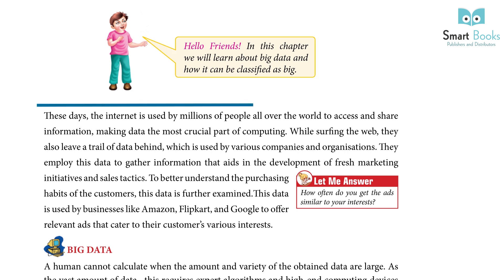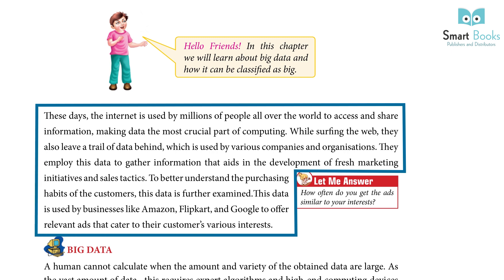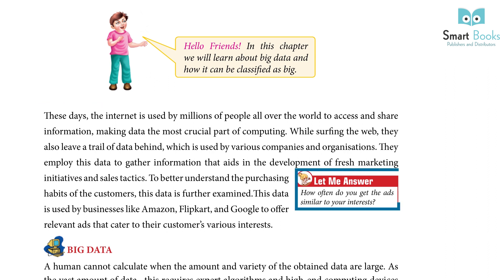Hello friends! In this chapter we will learn about big data and how it can be classified as big. These days the internet is used by millions of people all over the world to access and share information, making data the most crucial part of computing. While surfing the web, they leave a trail of data behind, which is used by various companies and organizations to gather information that aids in the development of fresh marketing initiatives and sales tactics. Businesses like Amazon, Flipkart, and Google use this data to offer relevant ads catering to their customers' various interests.